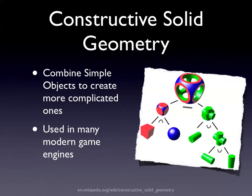Tron uses constructive solid geometry - boolean operations like AND and OR, but on three-dimensional things. All the wheels and vehicle parts are constructed by adding and subtracting primitive objects: spheres, planes, boxes, small spheres, and rods. These are combined to construct complex objects. Some modern game engines like the UT/Unreal 3 engine use this to construct basic level geometry - for example, a cube with a smaller cube subtracted to cut out a door.